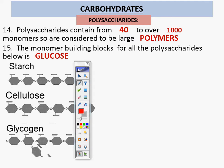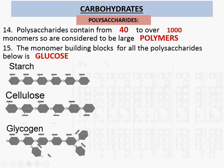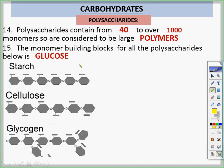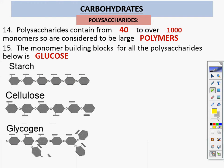Polysaccharides contain from 40 to over 1,000 monomers. The building blocks for all polysaccharides are glucose. The three polysaccharides you need to know are starch, cellulose, and glycogen.